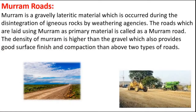Next is marum roads. Marum is a gravelly laterite material which occurs during the disintegration of igneous rocks by weathering agencies. Roads laid using marum as the primary material are called marum roads. The density of marum is higher than gravel, which also provides better surface finish and compaction than earthen and gravel roads.